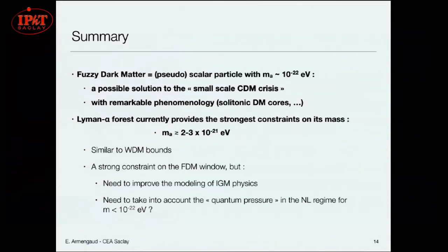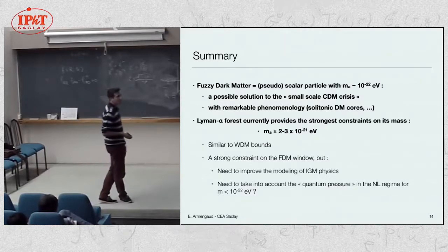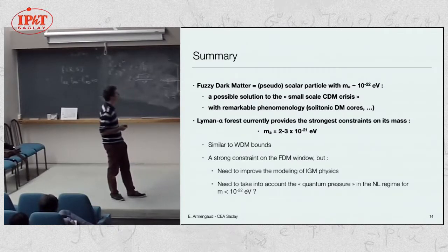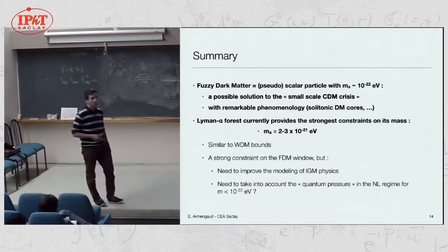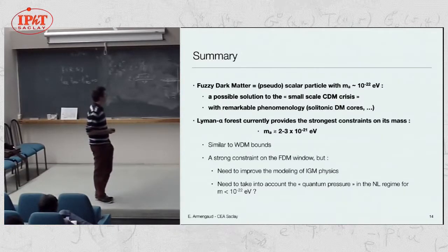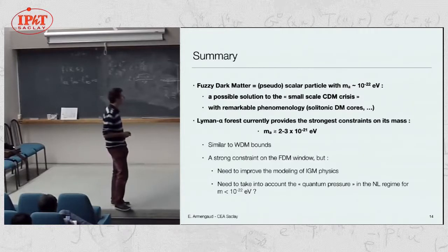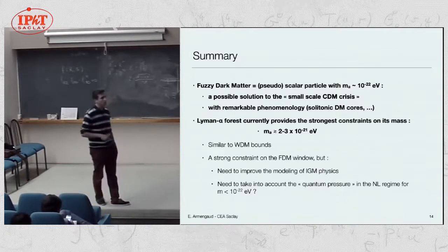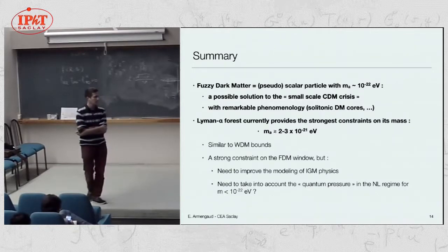That's it. In the end, fuzzy dark matter, a pseudo-scalar field with a well-defined mass around 10 to the minus 22 eV, is very interesting, especially in terms of phenomenology. Currently we have, with Lyman-Alpha-Forest, a strong constraint on this scenario. This is similar to the bounds that are set on warm dark matter or also on the mass of neutrinos, standard neutrinos. This is a strong constraint. However, we have to remind that, first, there is this IGM physics modeling. And more importantly, we may need to take into account this quantum pressure, but for low values of the mass. So we exclude mass ranges between 10 to the minus 22 and 10 to the minus 21 eV. Thank you.